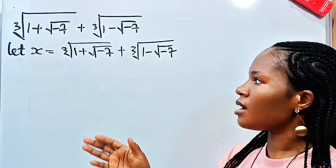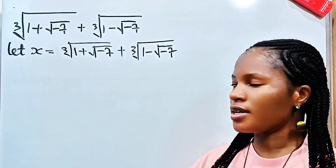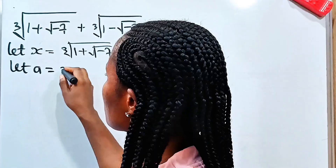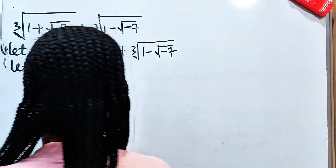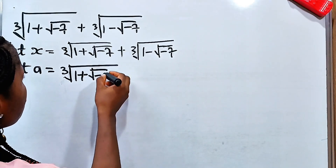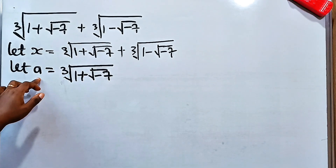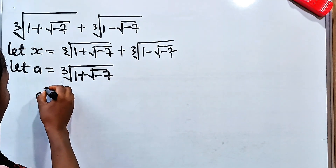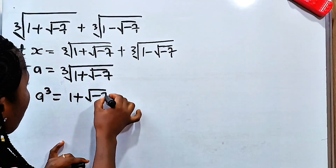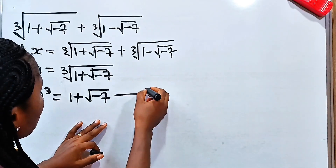Now we can say let a be equal to this and b be equal to this. So let a be equal to cube root of (1 plus square root of minus 7). If we cube a, then a³ will be equal to 1 plus square root of minus 7. Let's call this equation 1.